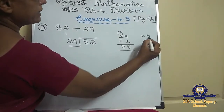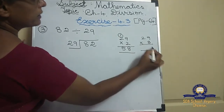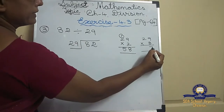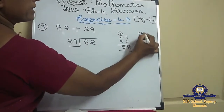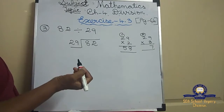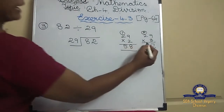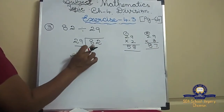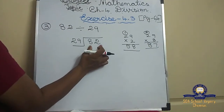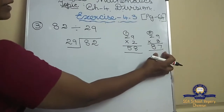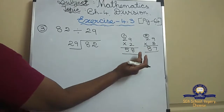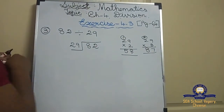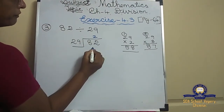Next: 29 threes — 3 nines are 27, 3 twos are 6, plus 2 is 8, so 87. But the dividend is only 82 — can we write 87? No, you can't. So the before number is 29 twos are 58.